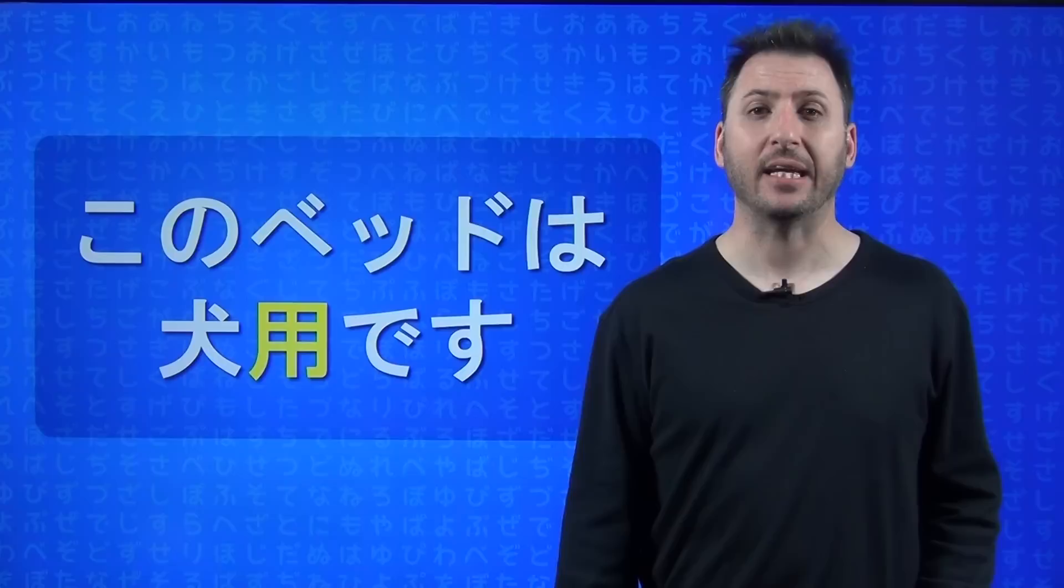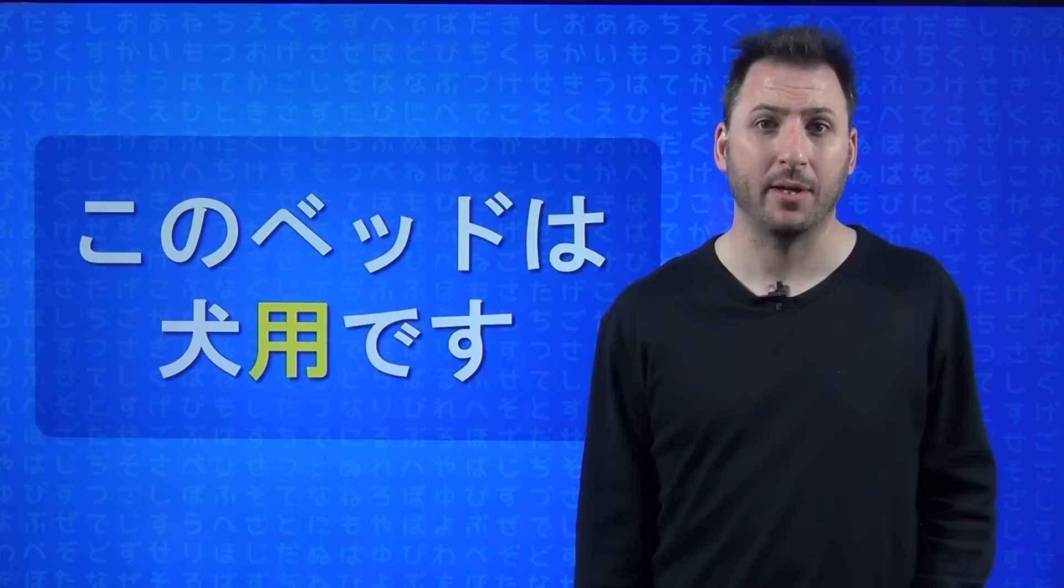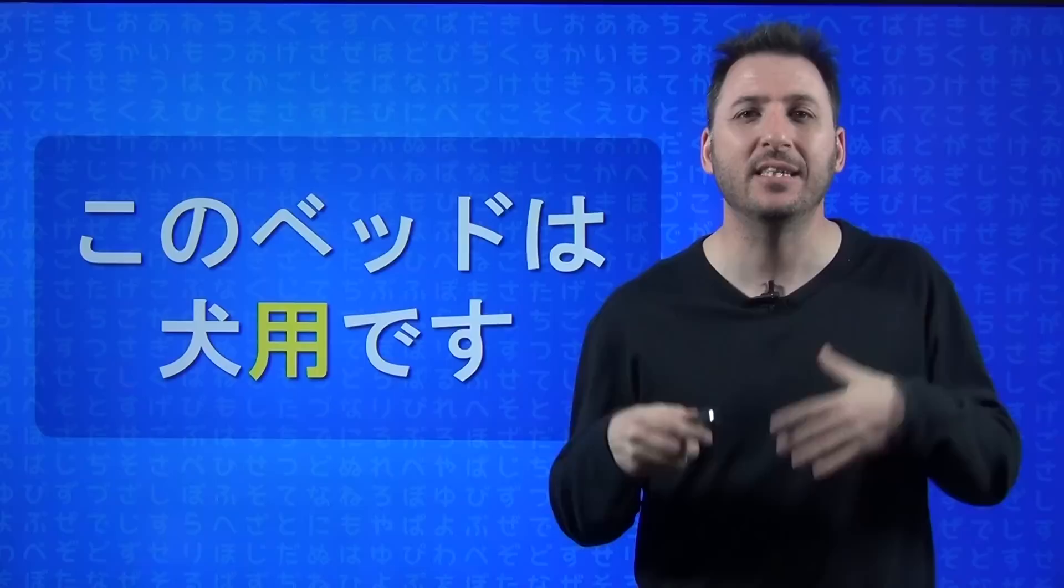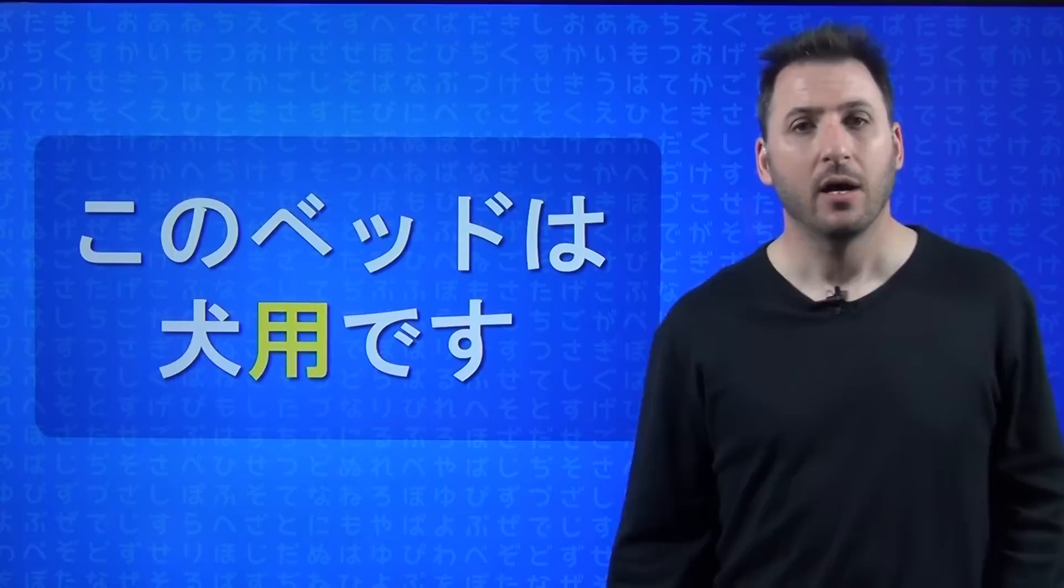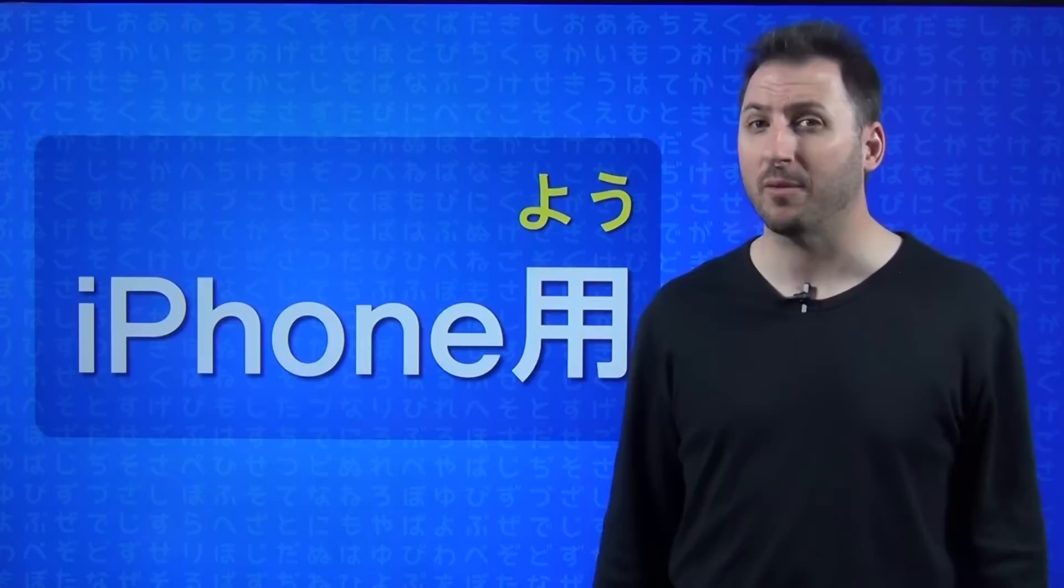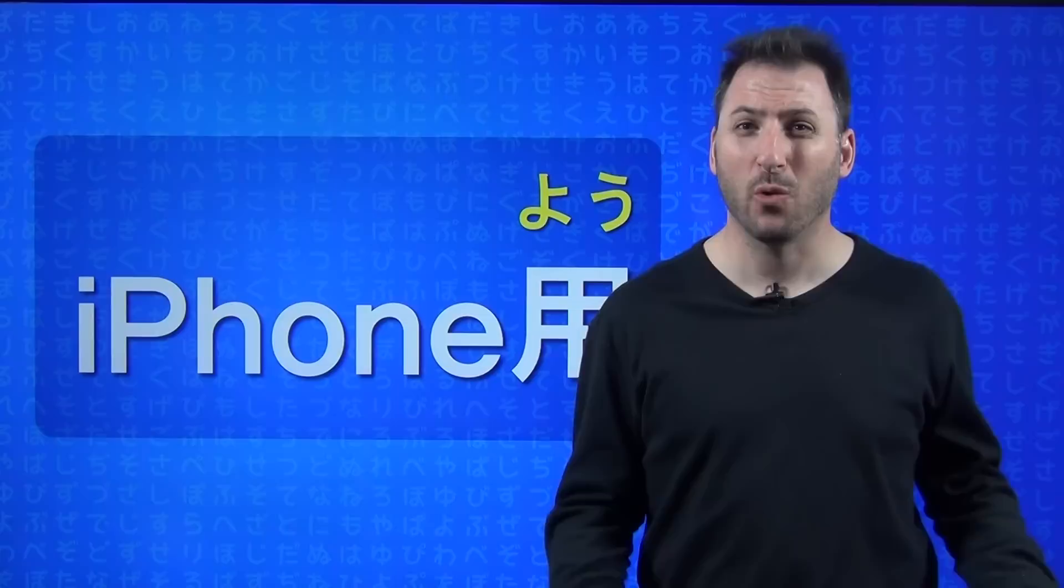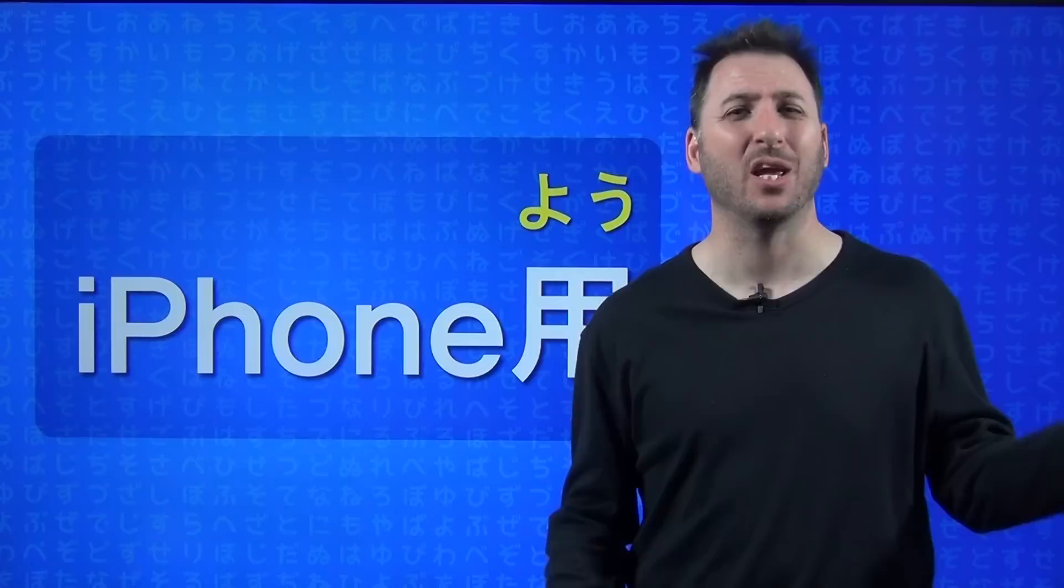This bed is for dogs. There are other ways to say this, but this is a simple way using yō. Another thing - if you have an iPhone and you're buying accessories in Japan, you might need to look for iPhone yō - for the iPhone. It might say five or six. It's important, especially if buying a case. Sometimes you'll see compatible - that's taiyō with a completely different kanji, but that will work too.